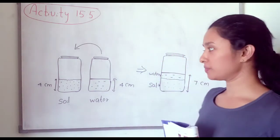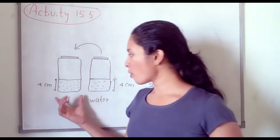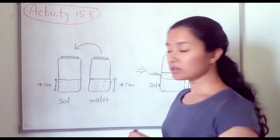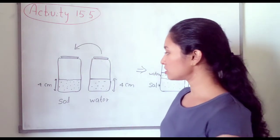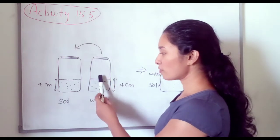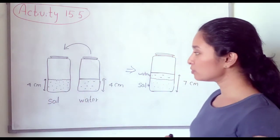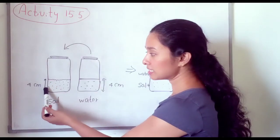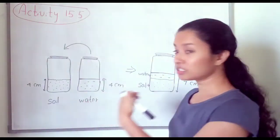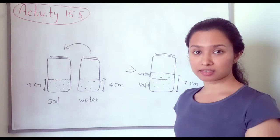Activity 15.5: We have to take two same-size glass vessels. For one glass vessel, we have to put some soil up to 4 centimeters. For another glass vessel, we have to put water up to 4 centimeters. When we add both together, the height should be 4 plus 4, which is 8 centimeters.